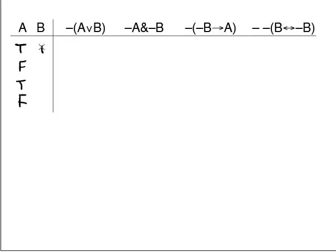Underneath the second letter, alternate true, true, false, false. What we've done is generated all the combinations of T's and F's possible with two sentence letters: the case where they're both true, the case where they're both false, and in between the possible combinations.